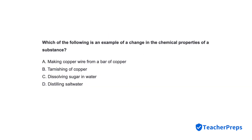Which of the following is an example of a change in the chemical properties of a substance? Correct response is letter B, tarnishing of copper.